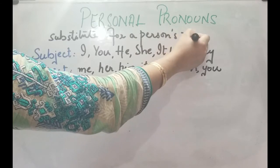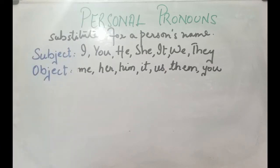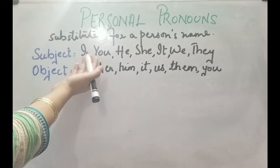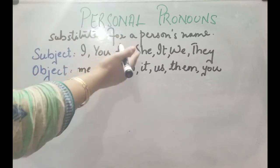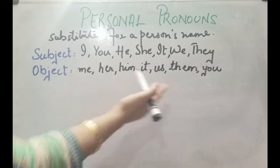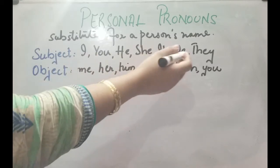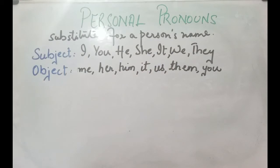You can notice that I have mentioned two things over here. A personal pronoun can act as a subject of the sentence — I, you, he, she, it, we, they are used as subjects. They can also be used as an object of the sentence, found in the later part — me, her, him, it, them, and you.